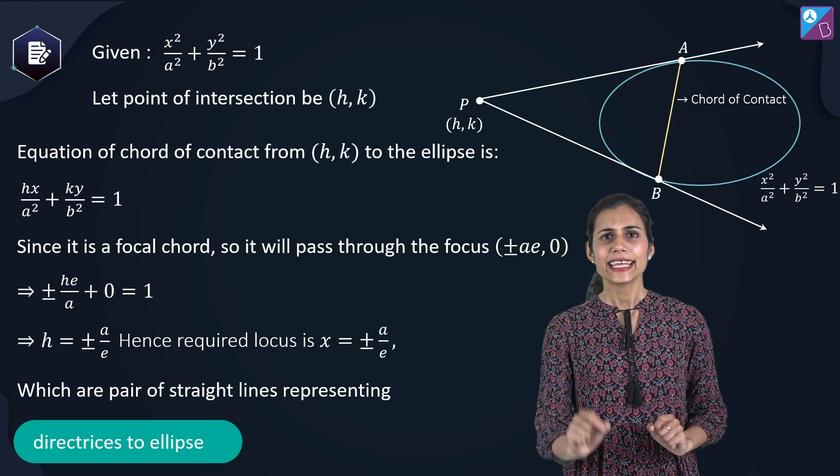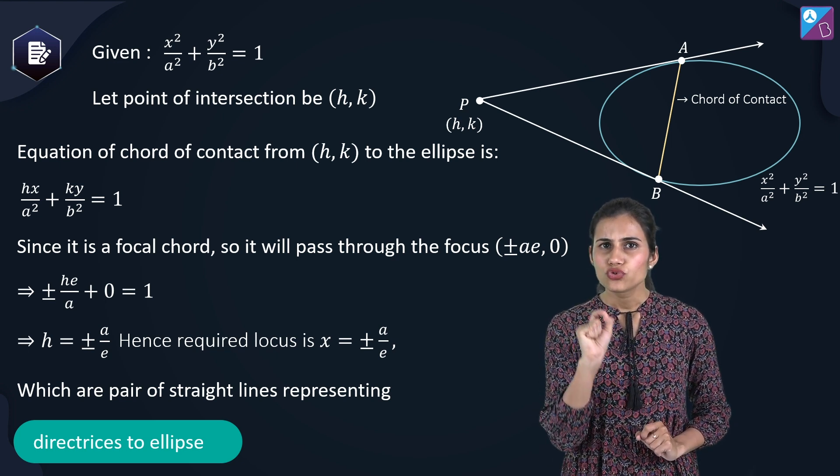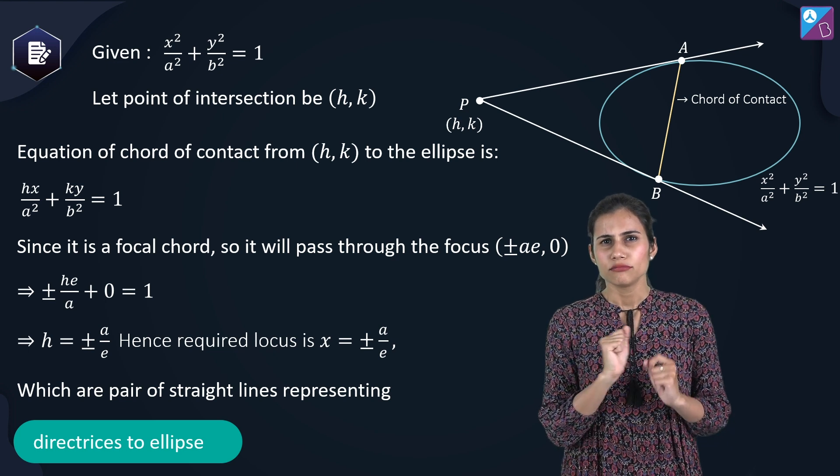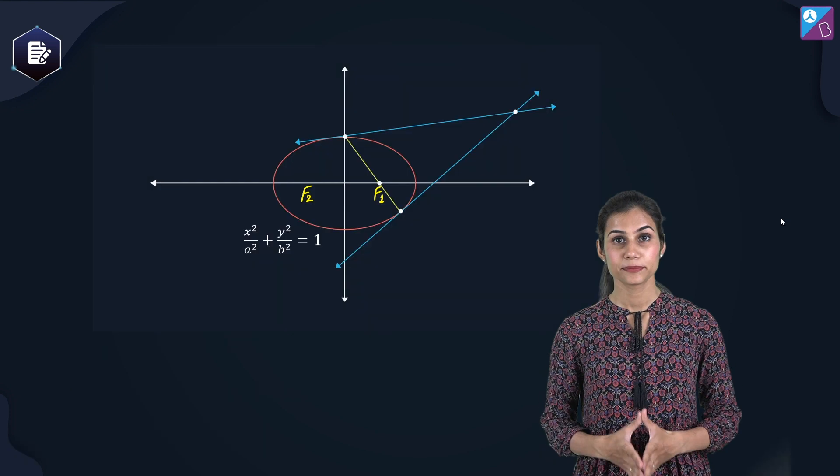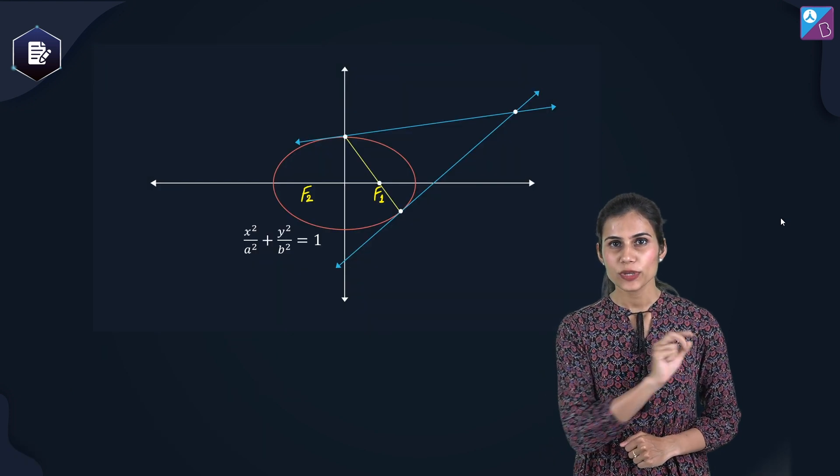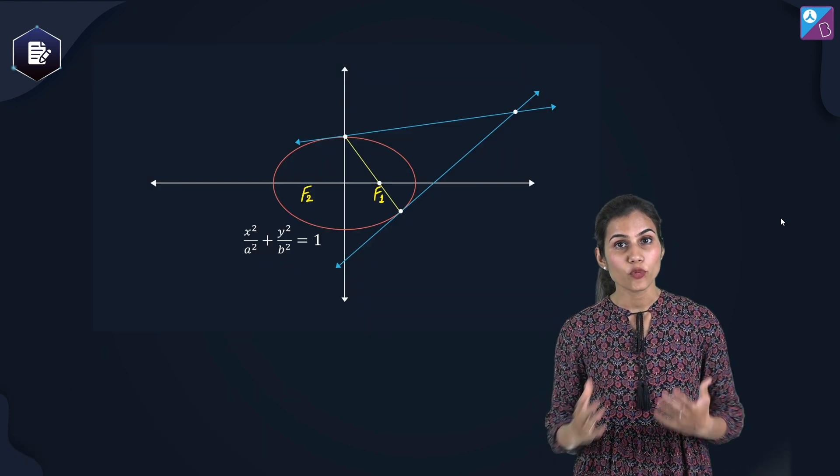But hey, is there any way to justify this answer geometrically? Yes. Let's talk about that. See, within an ellipse, we have two foci. Let's call them F1 and F2.